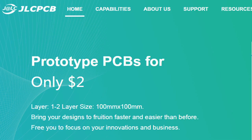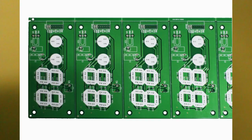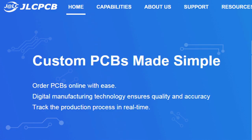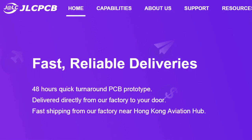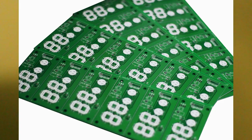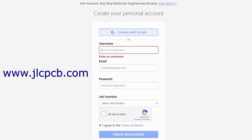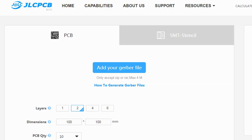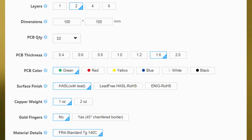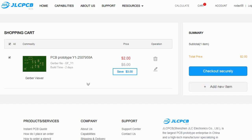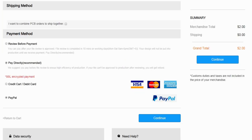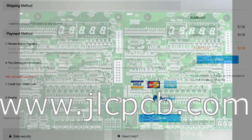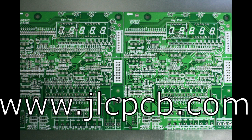This video is sponsored by JLCPCB. JLCPCB is a company that makes excellent quality PCBs at an unbeatable price. You can order boards online in minutes. After registration, upload your Gerber files, select the PCB properties, select the payment method and place your order. Best price and quality for all your PCB needs.